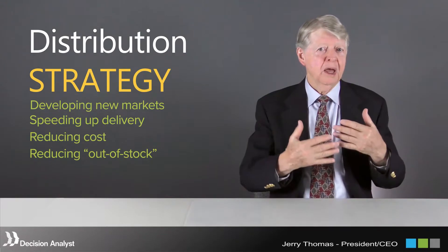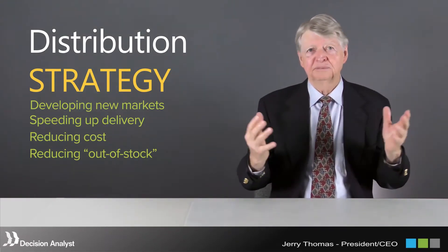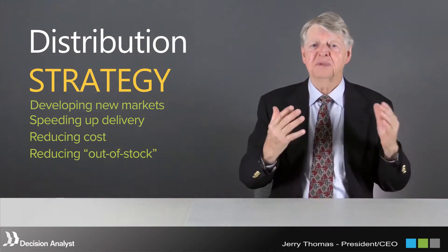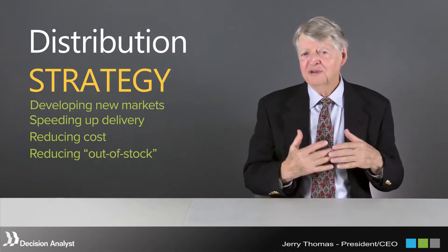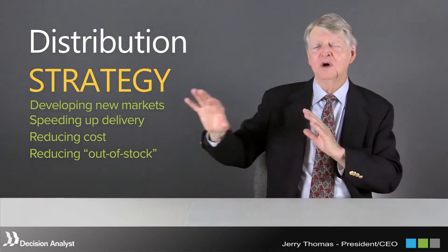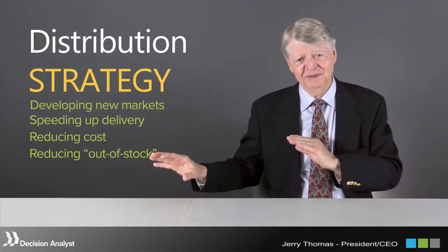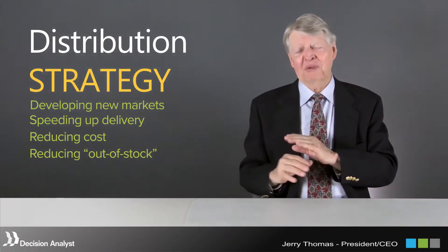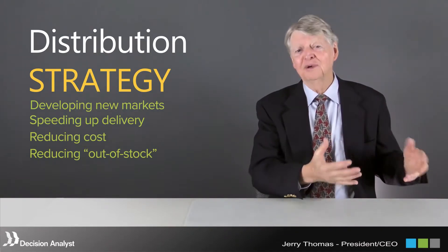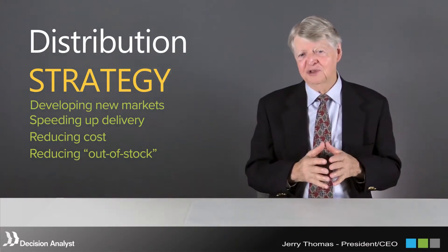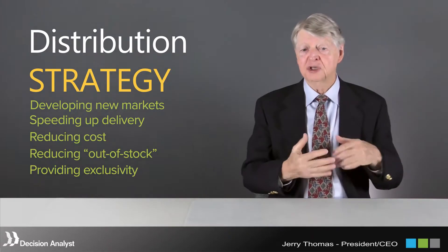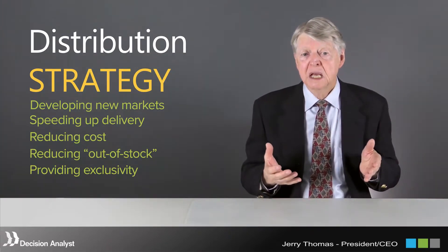Reducing out-of-stocks is another role distribution can play. If your business suffers from a severe out-of-stock problem, you can revamp the distribution system to solve it. However, you have to keep one eye on marketing and promotion activity and one eye on logistics and the supply chain, because very often what appears to be a logistics problem is actually a promotional problem — promotions that are too deep or too frequent can strip all the product off retail shelves.